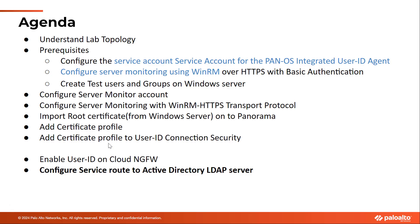After enabling User ID, we need to establish connectivity from Cloud NGFW towards the Active Directory LDAP server. Since Cloud NGFW is a managed service, you will not have access to the management of the back-end resources. You will be exposed with a loopback interface that will be used as the source to initiate connectivity from Cloud NGFW to the Active Directory LDAP server. We are going to configure a service route to establish this connectivity.